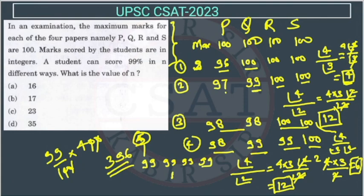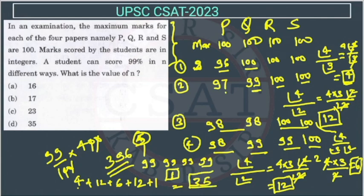Now we have to add all these possibilities. So this is 4 we got here, then we got 12, then this 6, then this 12 and then this 1. So this will be 12 plus 12, 24 plus 6, 30, 4, 1 plus 5. So 35 ways we can get it. So the answer is option D. I hope you have got it.